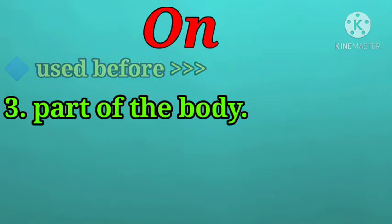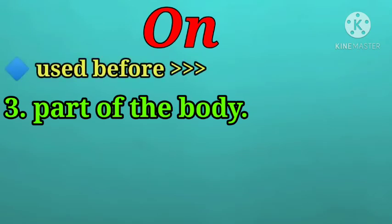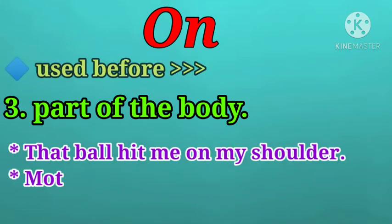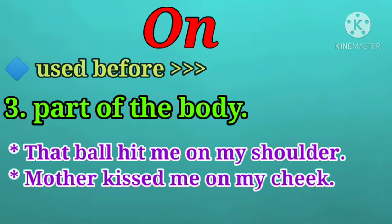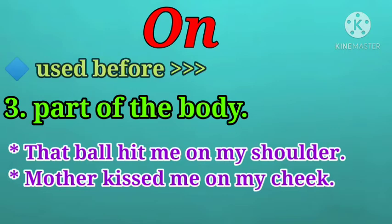'On' is used to indicate part of the body. For example: that ball hit me on my shoulder, mother kissed me on my cheek. So we can use the preposition 'on' to indicate part of the body.